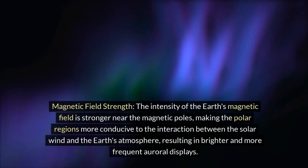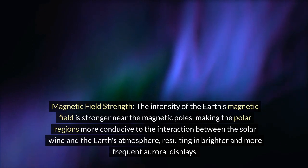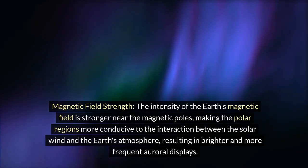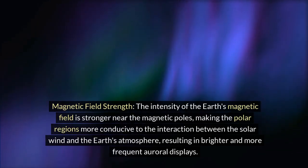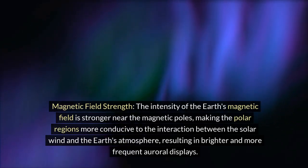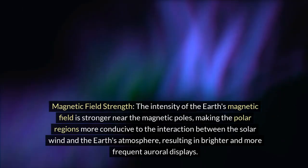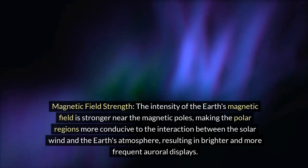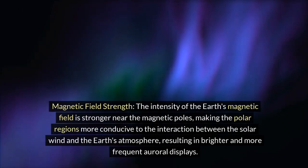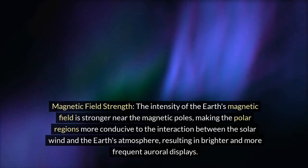Magnetic field strength. The intensity of the Earth's magnetic field is stronger near the magnetic poles, making the polar regions more conducive to the interaction between the solar wind and the Earth's atmosphere, resulting in brighter and more frequent auroral displays.